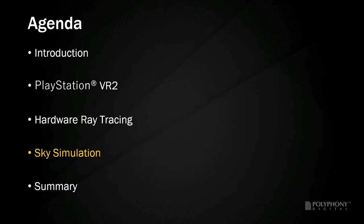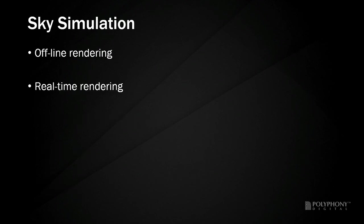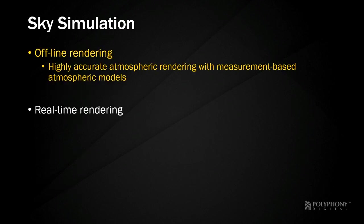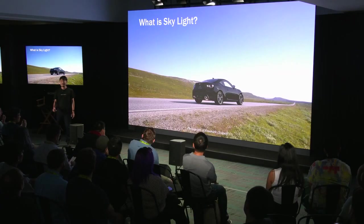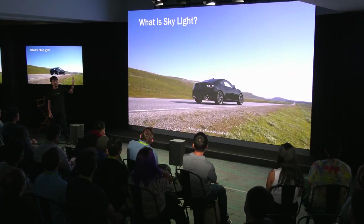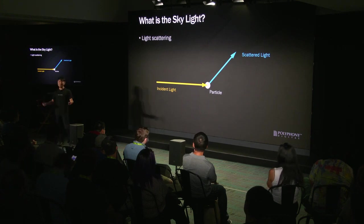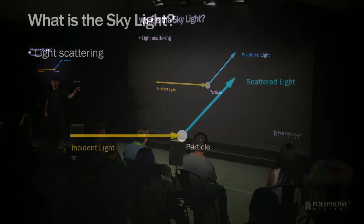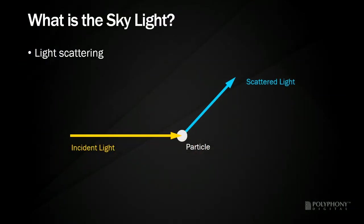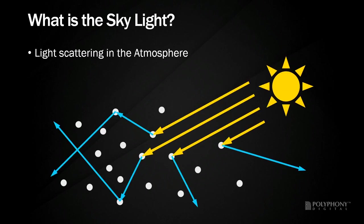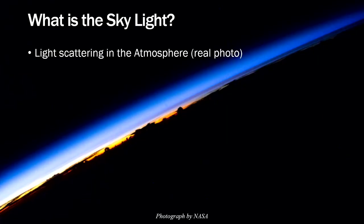Next, I will discuss sky simulation. There are two parts: high-quality offline sky rendering and its use in real time. Our offline sky rendering is a highly accurate atmospheric rendering using measurement-based atmospheric models. In the atmosphere, incoming light interacts with small particles, changing the direction of propagation — a phenomenon called light scattering. Contrast particles floating in the atmosphere scatter sunlight in different directions; the atmosphere that scatters sunlight appears to glow — that is skylight.